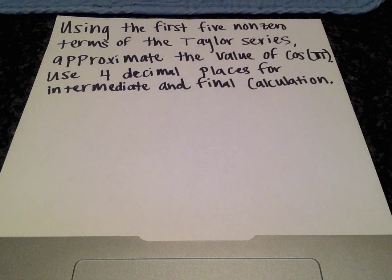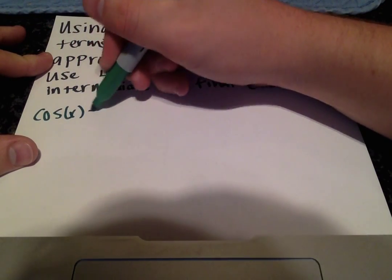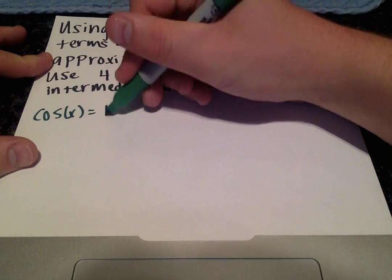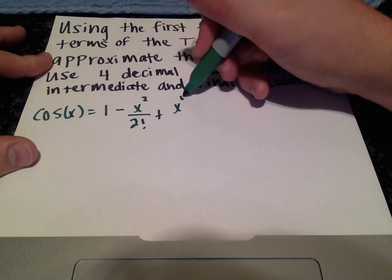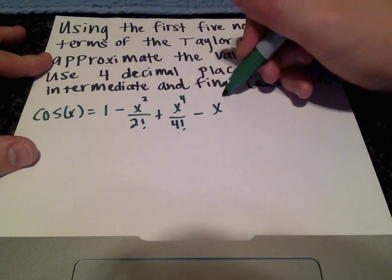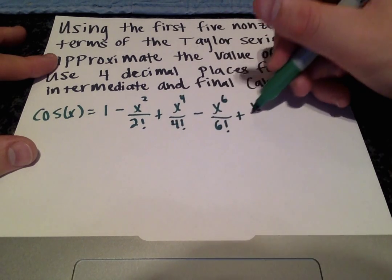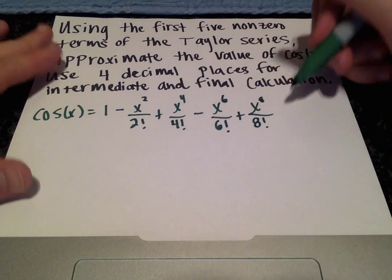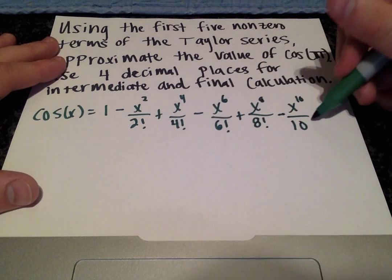So first things first, the Taylor series expansion for cosine of x is 1 minus x squared over 2 factorial plus x to the fourth over 4 factorial minus x to the sixth over 6 factorial plus x to the eighth over 8 factorial minus x to the tenth over 10 factorial.